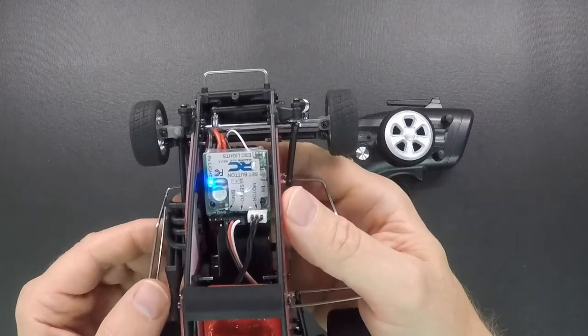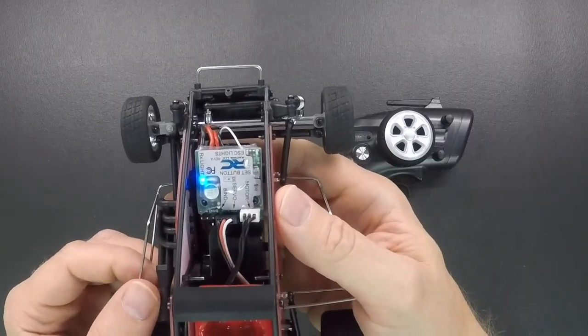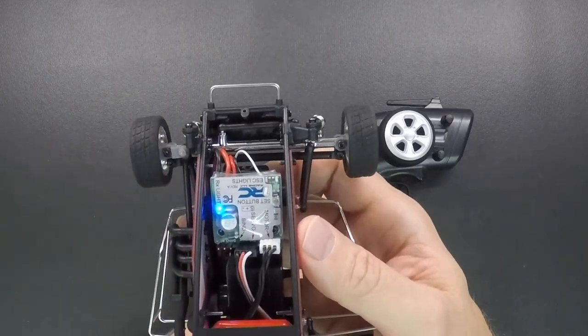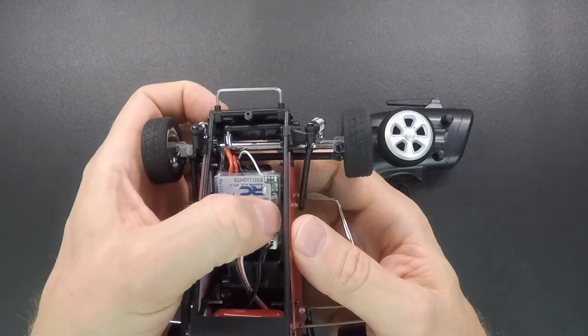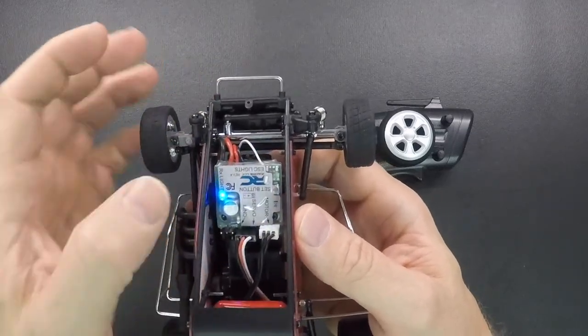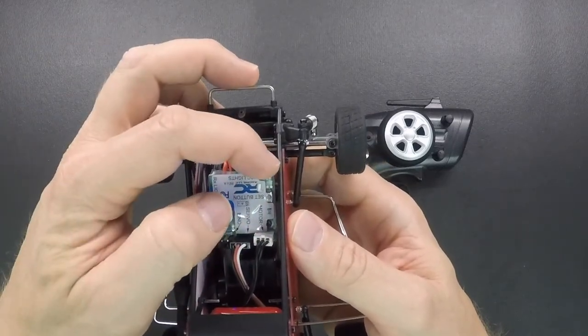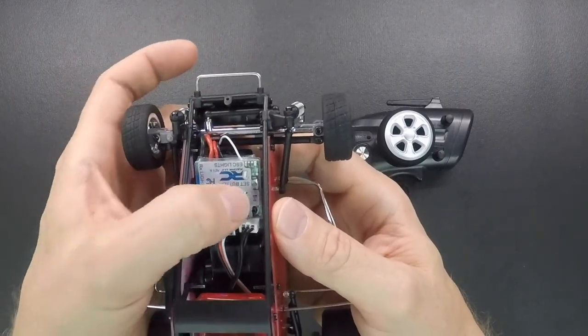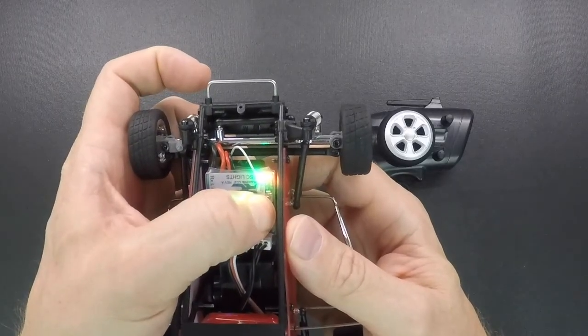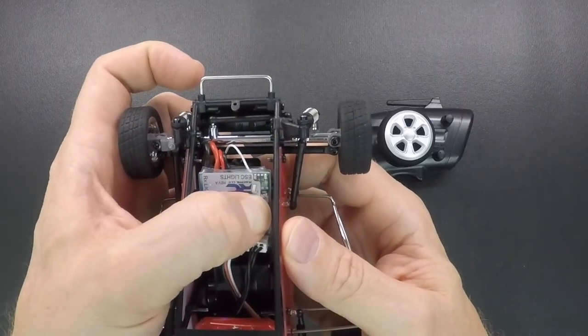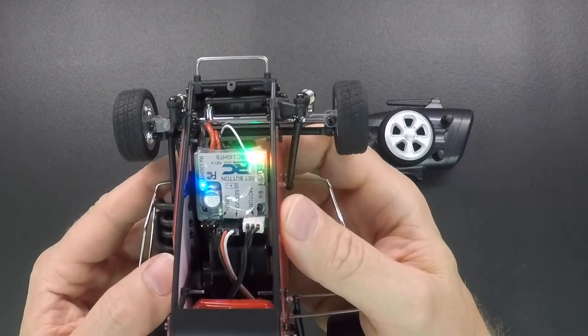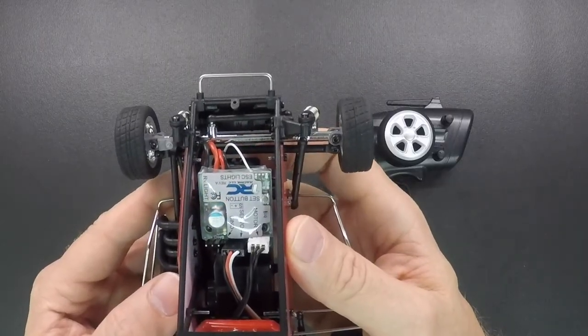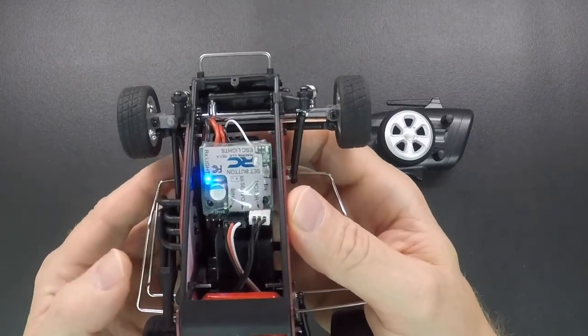Another thing you can do is if you have any problems with settings or something's not setting right or whatever, there's a factory reset on these too. So what you want to do is make sure the radio's on, make sure the car's on, and you're going to hold this set button down with everything on. And you're going to see this red and this green light start to, they're going to come on at the same time and there's going to be a slow blink. Now I'll do that. Hold this down. You'll see both of them light up and you can release the button and they'll just keep flashing like that. So that means everything has been factory reset. Then just turn the car off, turn the car back on and everything is reset.